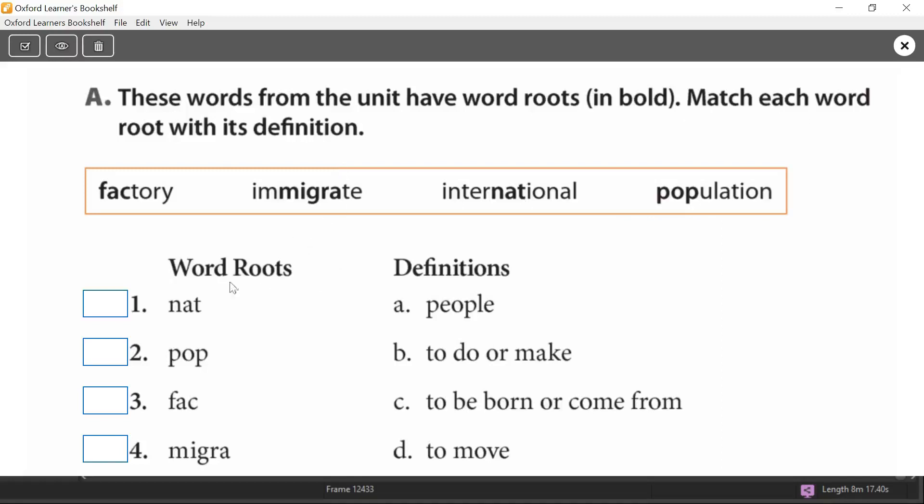Let's look at number one. The word root, judhur. And then we look at the definitions, the ta'arif. So let's look at number one. Nat, N-A-T. Can you see which word has that root? Yes, it's international. And we know that N-A-T has a definition with it being to be born or come from. So this word international is connected to where people are born or come from. International countries.